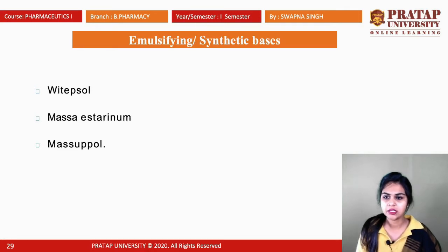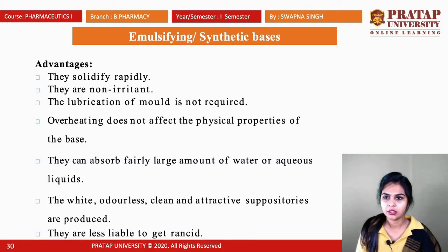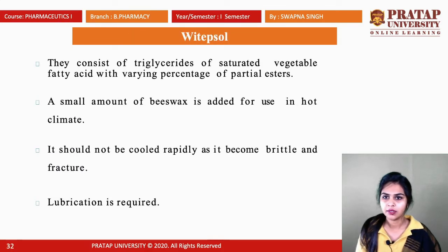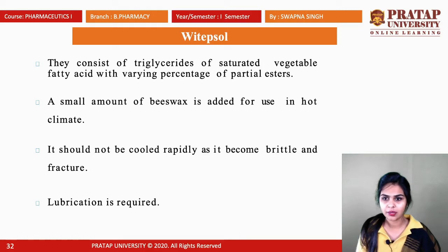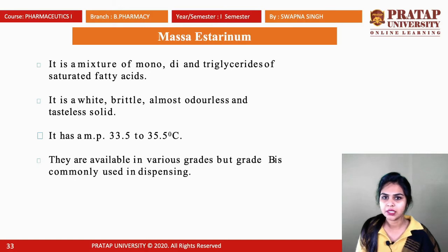Emulsifying synthetic bases are further classified into three types: white upsole, massasterinum, and masopol. White upsole consists of triglycerides of saturated vegetable fatty acids and a varying percentage of partial esters. A small amount of beeswax is added for use in hot climates. It should not be cooled rapidly as it becomes brittle and fractures, and lubrication is required for white upsole bases.